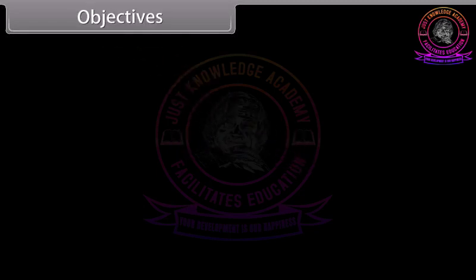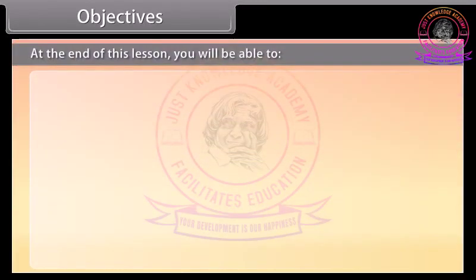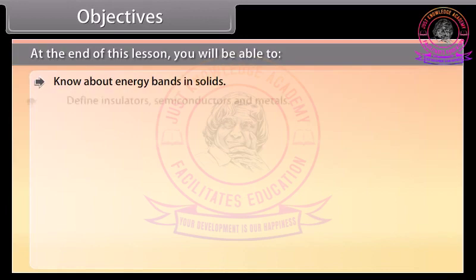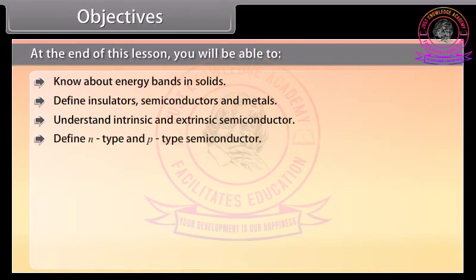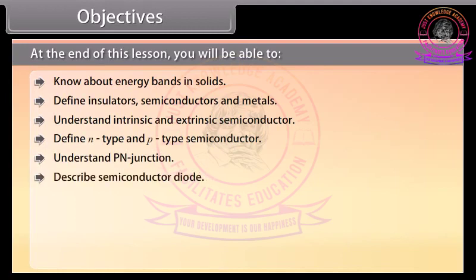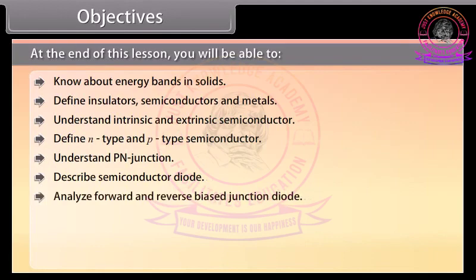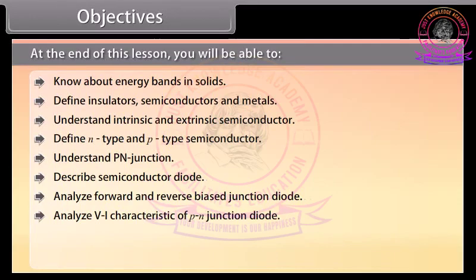Objectives. At the end of this lesson, you will be able to: know about energy bands in solids; define insulators, semiconductors, and metals; understand intrinsic and extrinsic semiconductors; define N-type and P-type semiconductors; understand P-N junctions; describe semiconductor diodes; analyze forward and reverse biased junction diodes; analyze V-I characteristics of a P-N junction diode; define rectifier; and explain Zener diode.